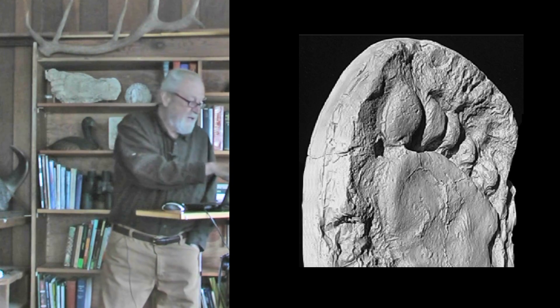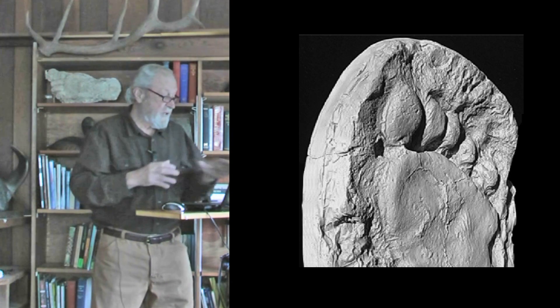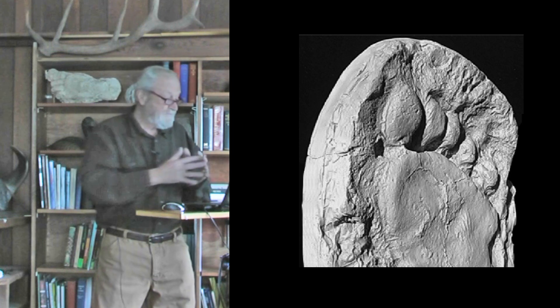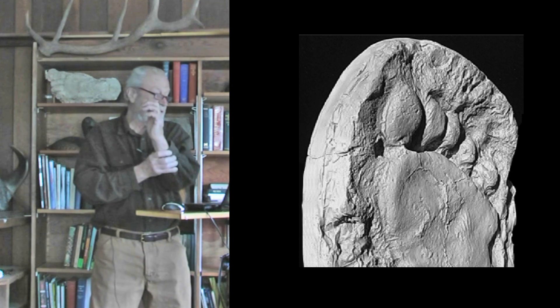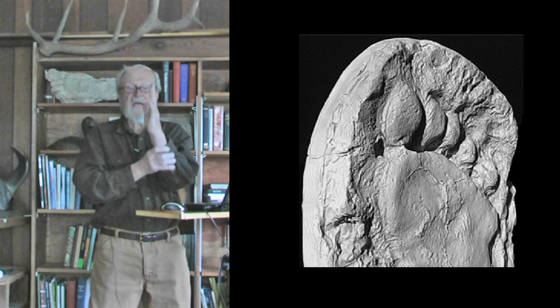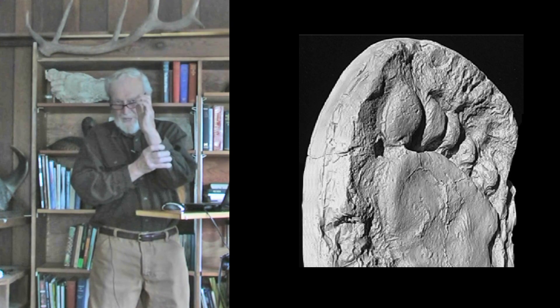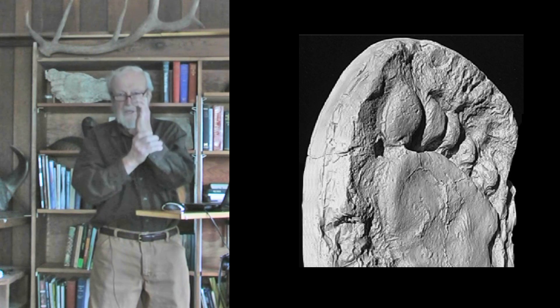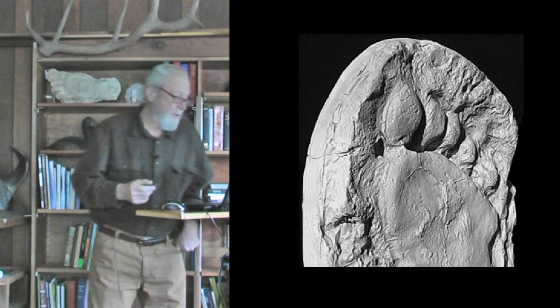For years, people were puzzling about the short-toed Sasquatch and the long-toed Sasquatch, if there was such a thing. And then came a track cast from 1982, from Grays Harbor County, Washington — a wonderful cast in which the toes are held in a very tightly curled position, showing us that yes, the toes are long, but sometimes they're held like this so that only the toe tips register in the soil, giving the appearance of short-toed tracks.